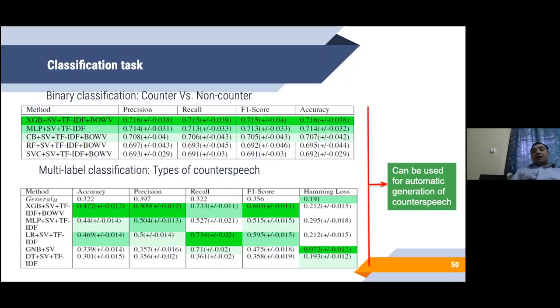We also did a classification, a very standard off-the-shelf machine learning exercise, where we tried to identify, given some training data, the counter speech versus non-counter speech. We used some very standard bag-of-words model to identify or predict whether a message is a counter speech or a non-counter speech. Also, we tried to do the second-level classification. If something is a counter speech, can we actually also classify them into one of the different types?